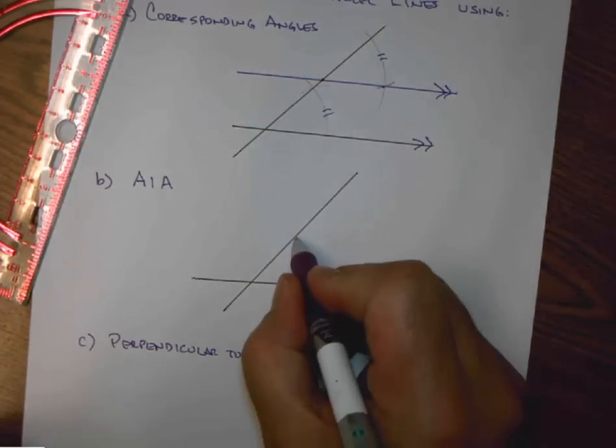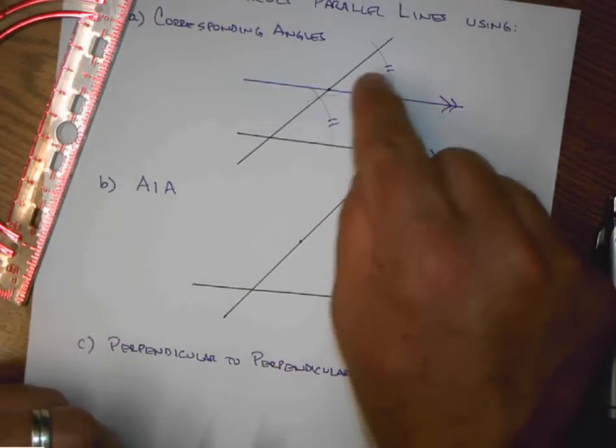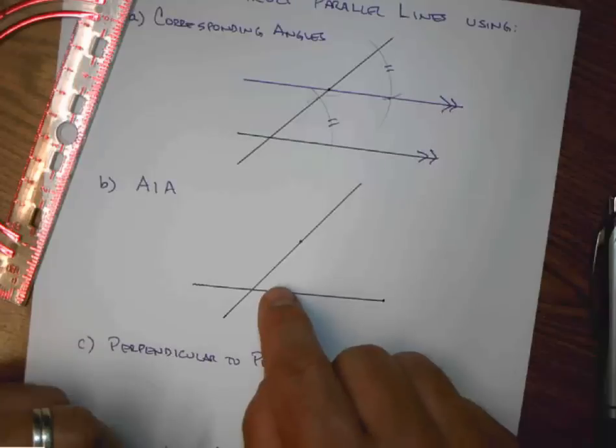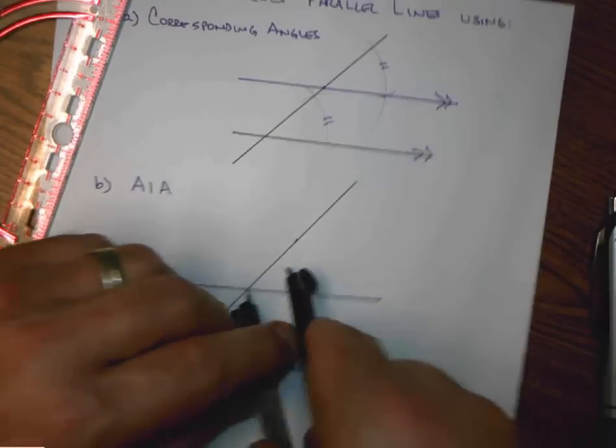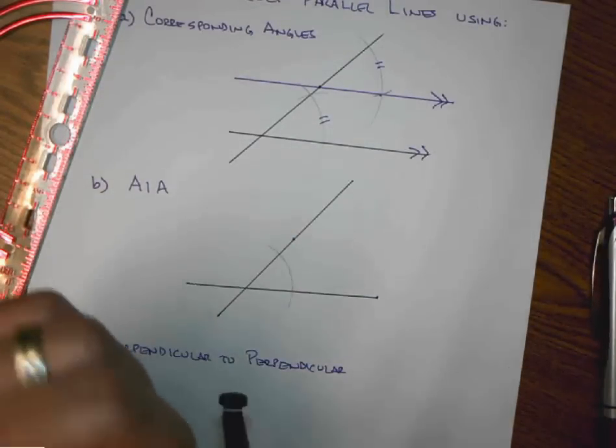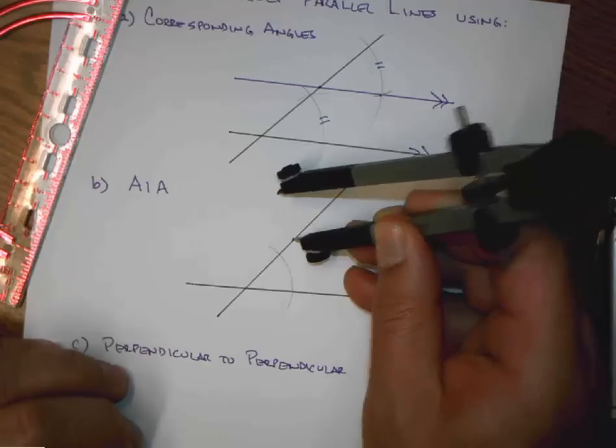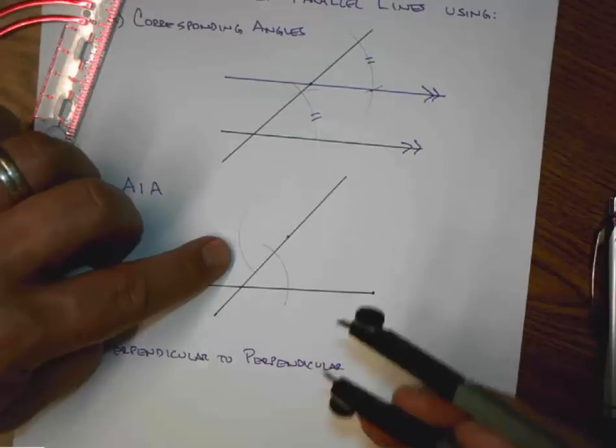I'll pick some point along my transversal to copy an angle, and this time, instead of copying it into a corresponding angle relationship, I'm going to copy it into an alternate interior angle relationship. But the point remains the same. From this vertex, I'll make an arc. I'll then carry that arc to my new point, directing it to fall where I expect the alternate interior angle to be.